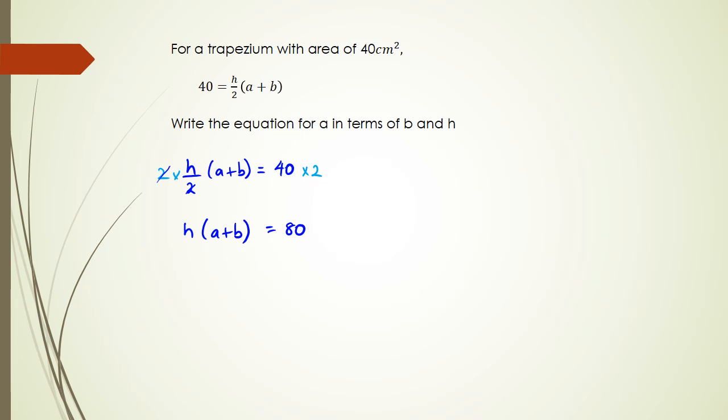Now I need to get rid of the h, so I have to divide both sides by h. The h's cancel out and I have a plus b equals 80 over h. Obviously I need to get rid of the b, so subtracting b from both sides, I end up with a equals 80 over h minus b.